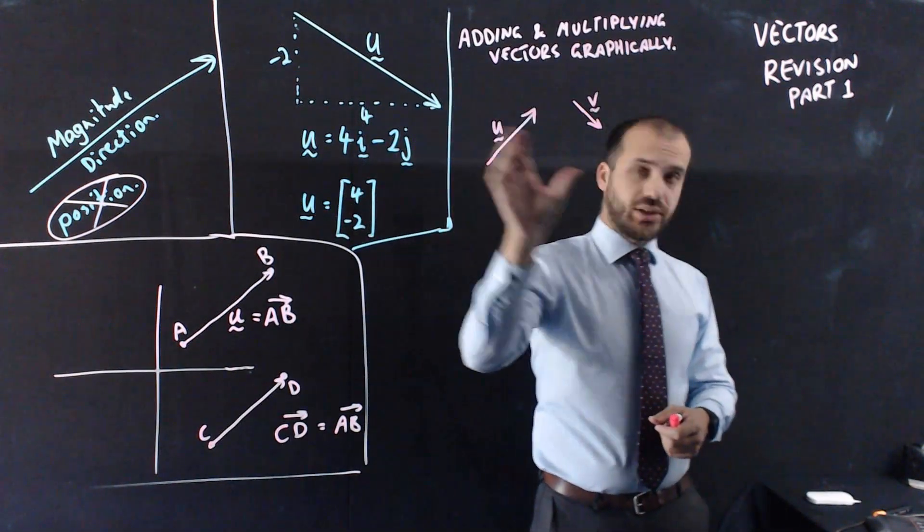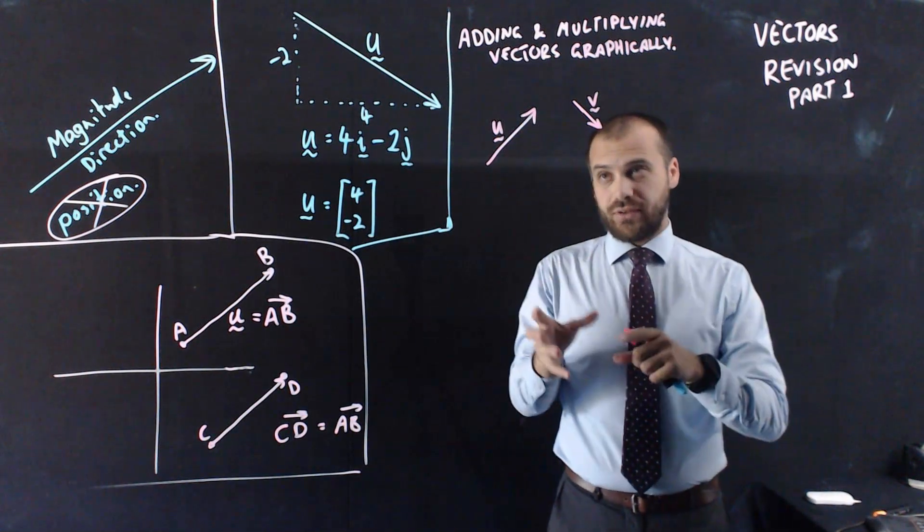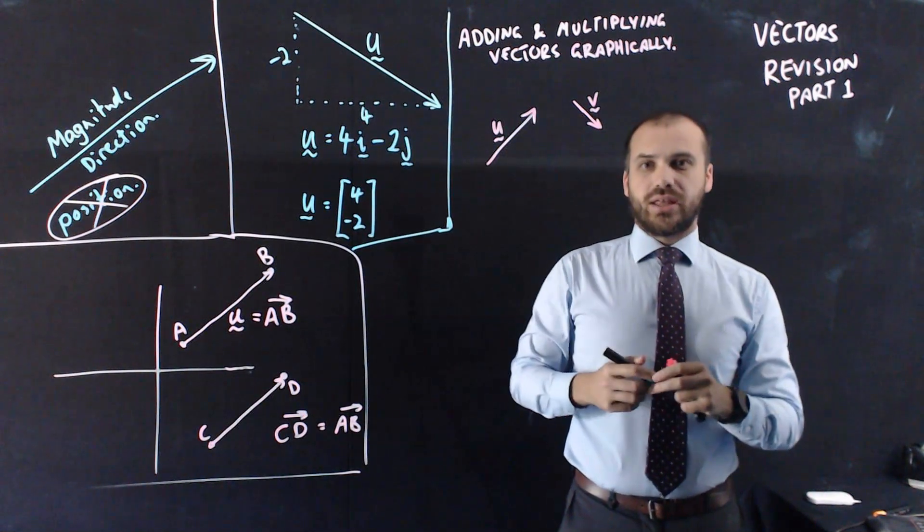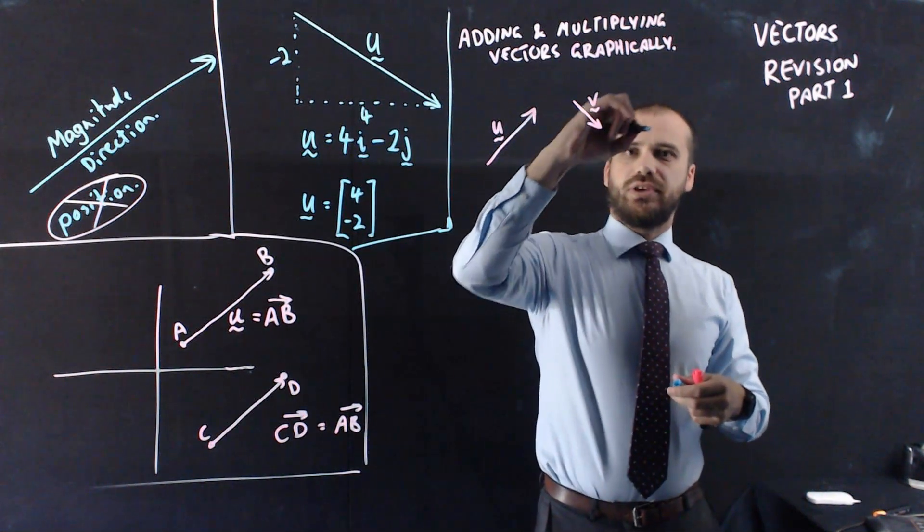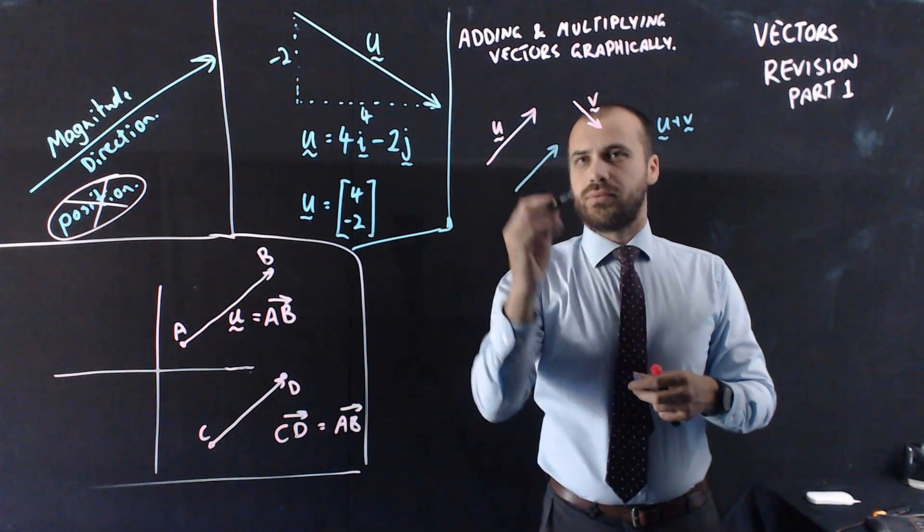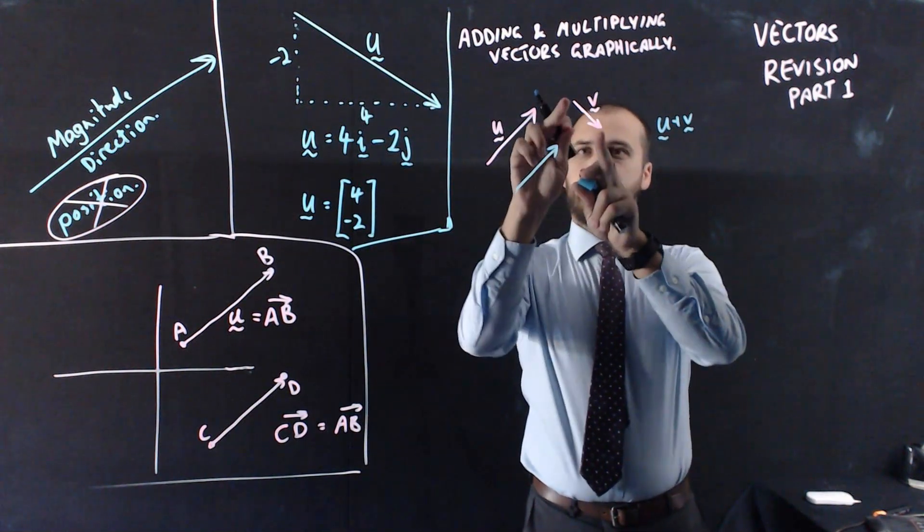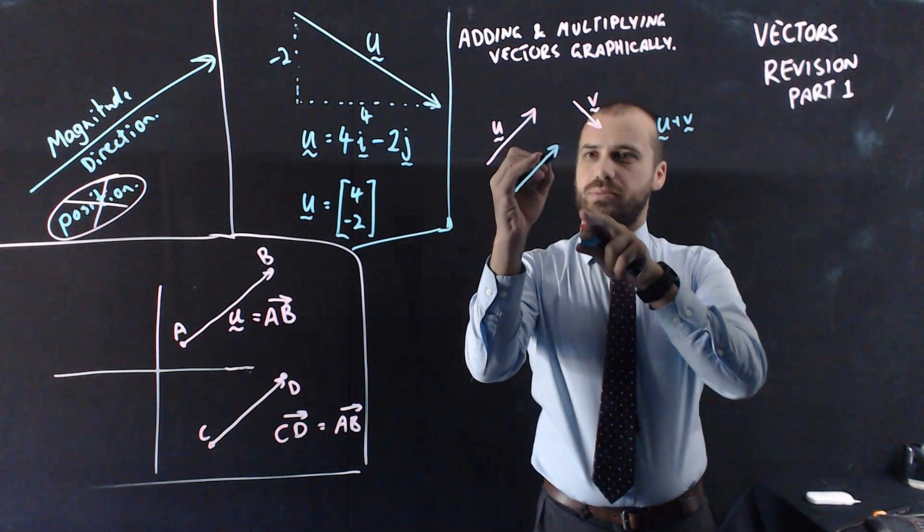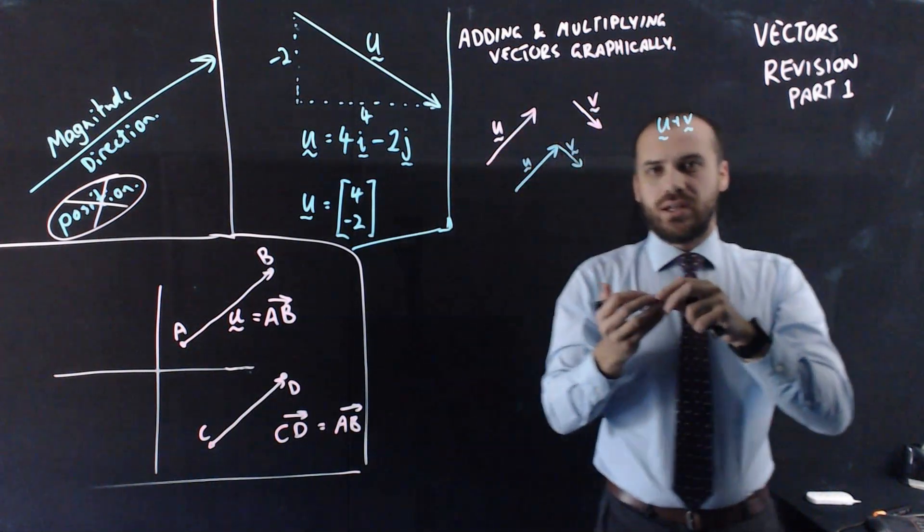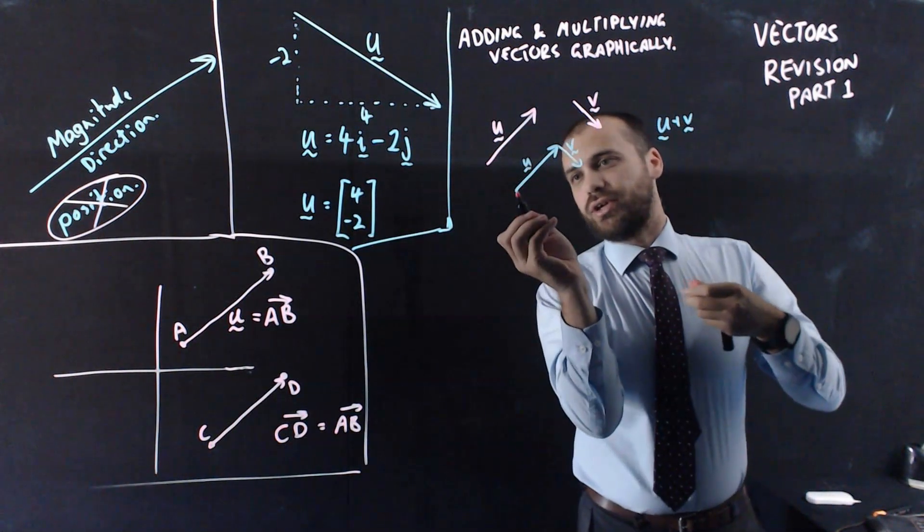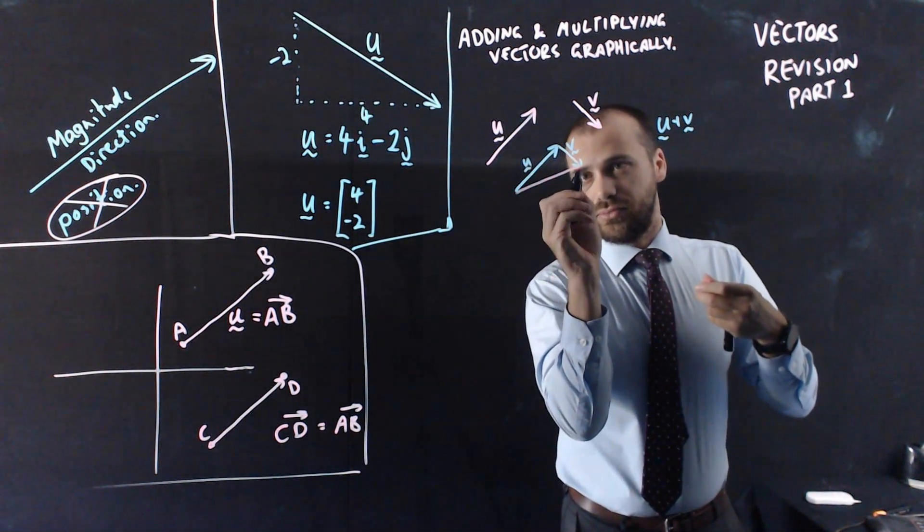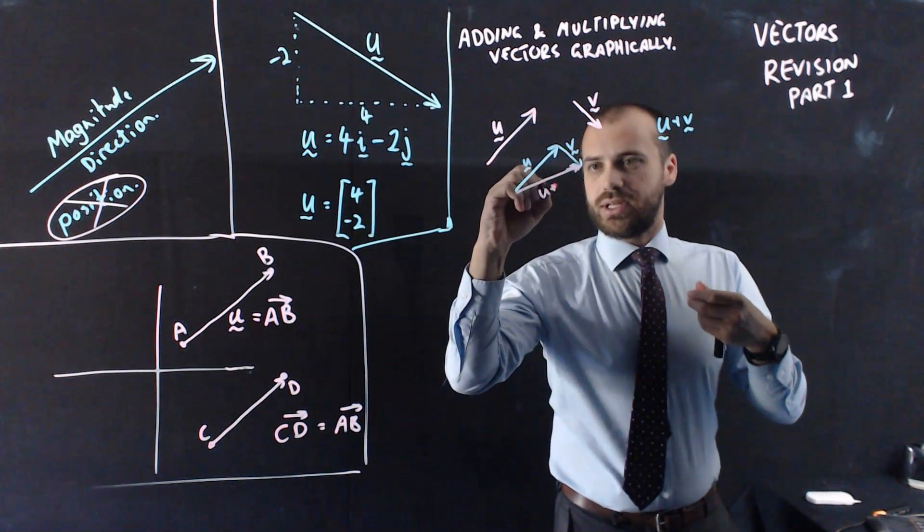So we've got ahead of ourselves a little bit here, so let's move backwards a little bit. Adding and multiplying vectors graphically. So we've got U and we've got V, these two vectors. If we want to add them together, it's really straightforward. So U plus V, we take U, we'll draw that, we take V and we add its tail to U's tip like that. So there's U, there's V. Now U plus V, the new vector that we're trying to create is from the tail of U to the tip of V. So that's U plus V.